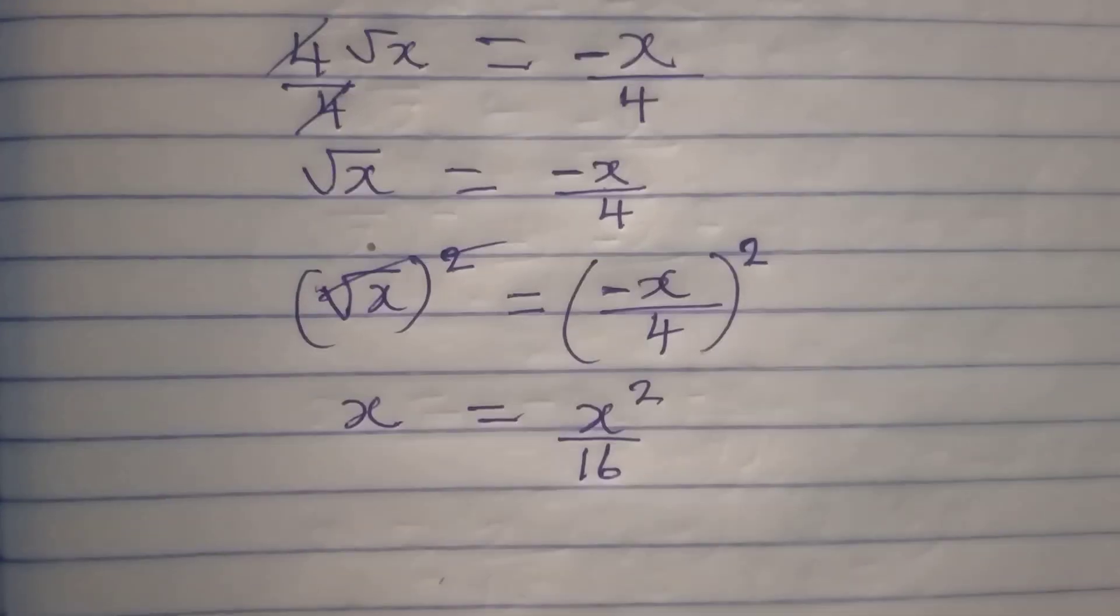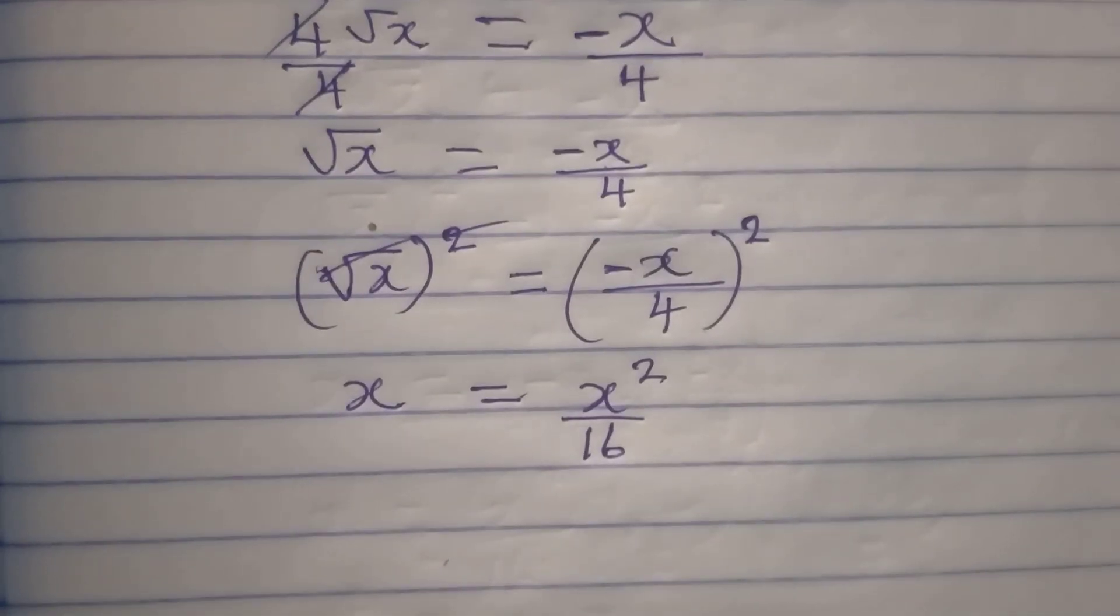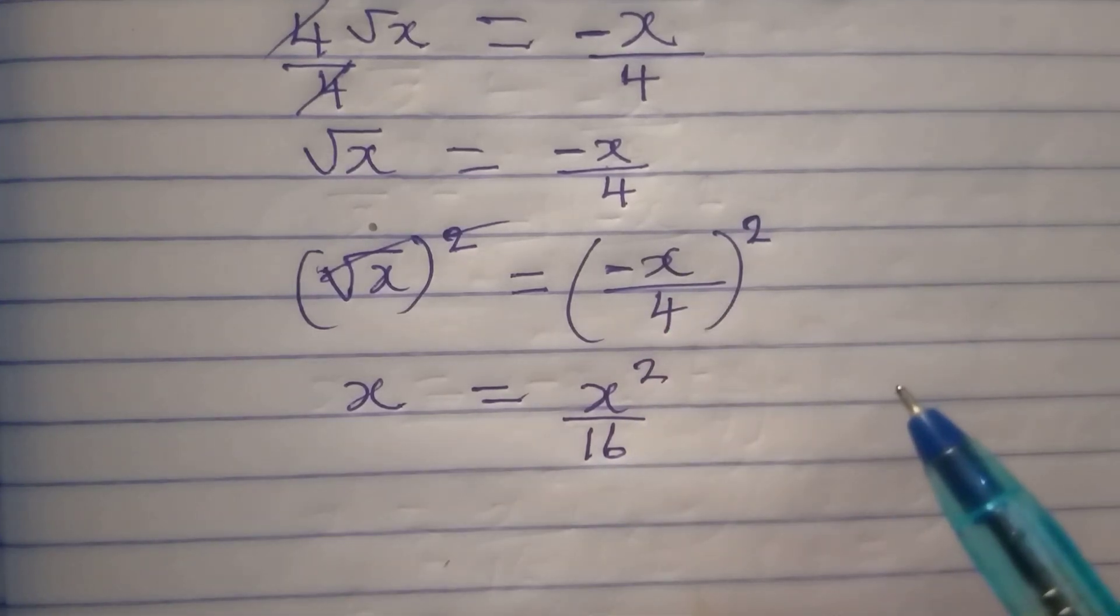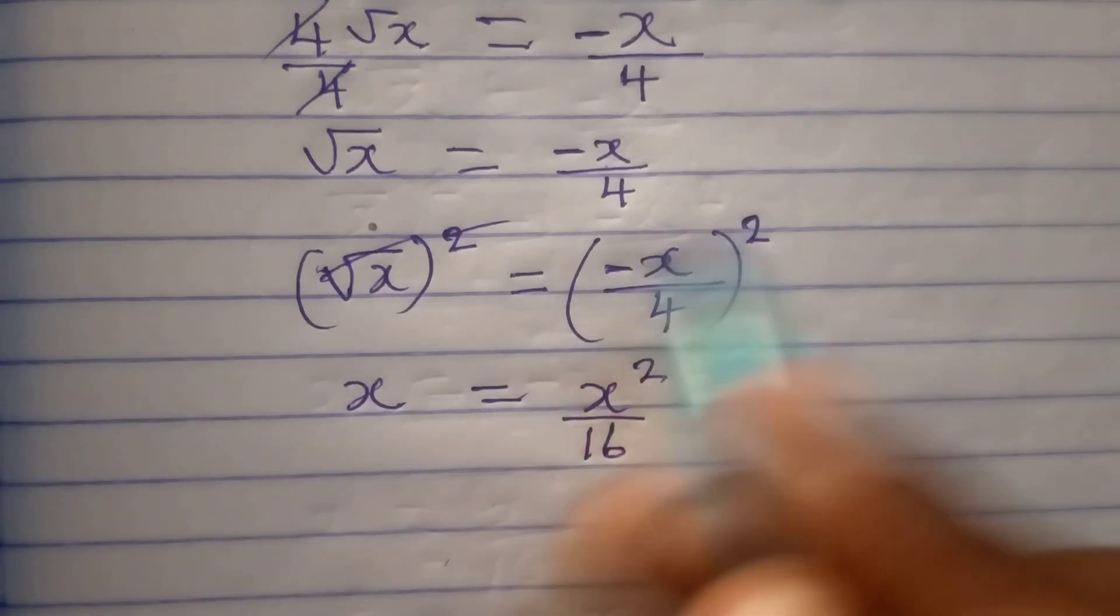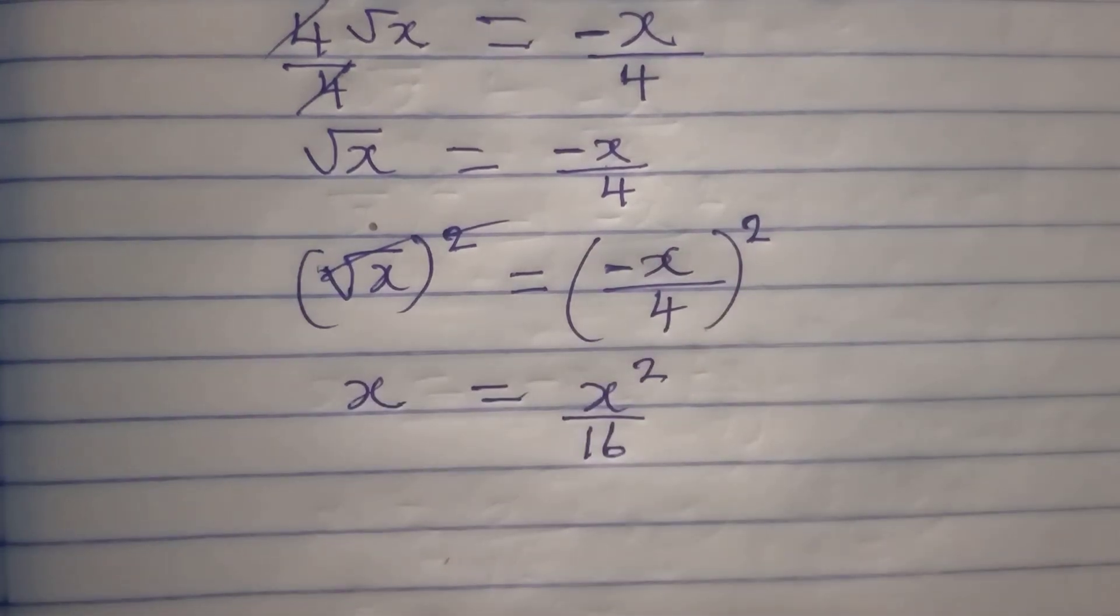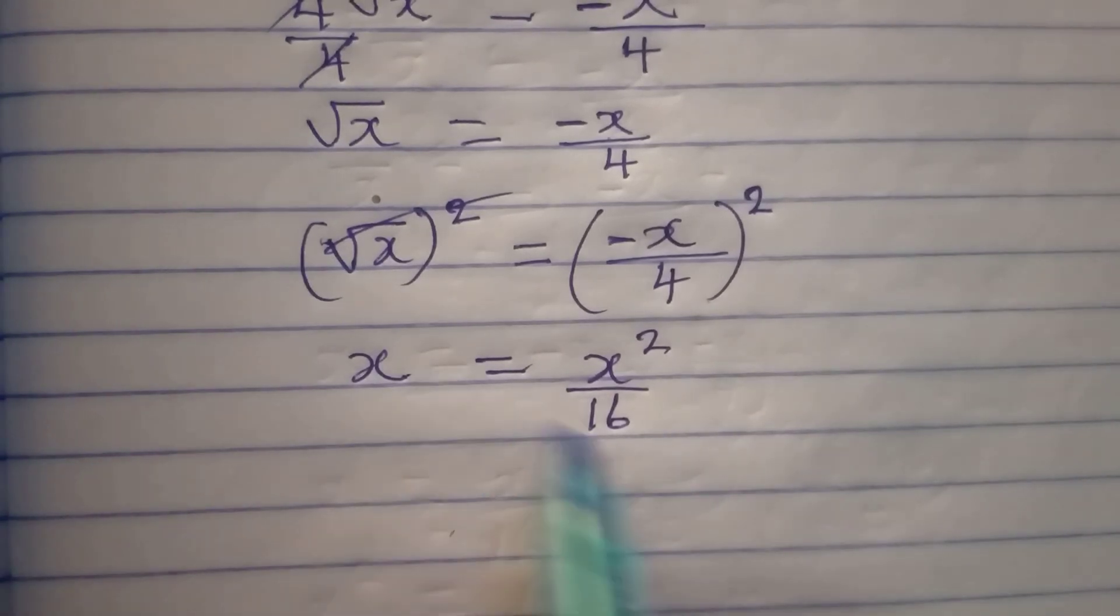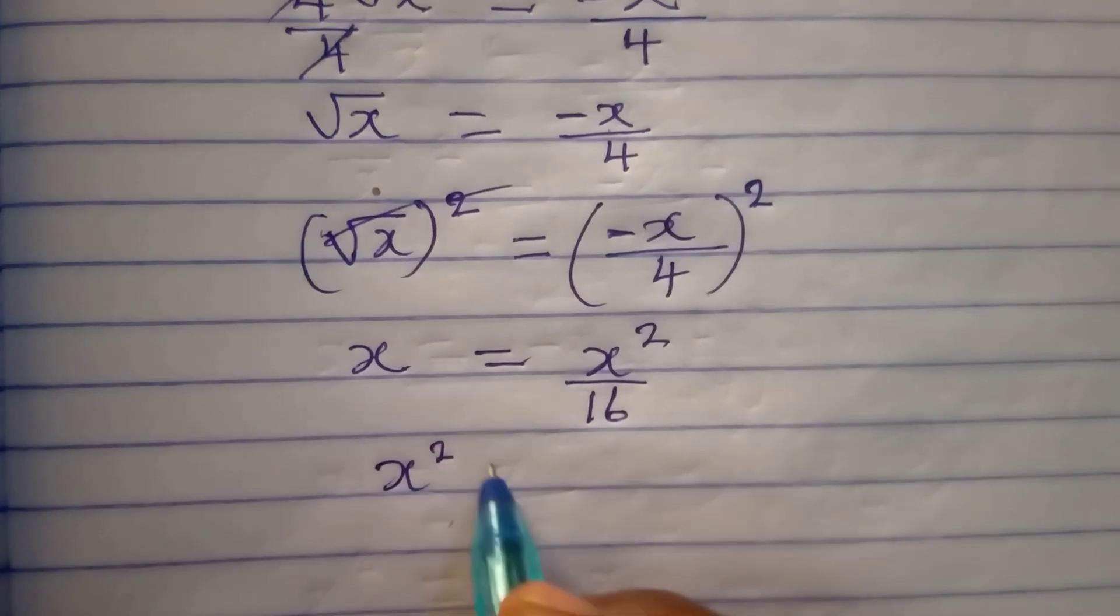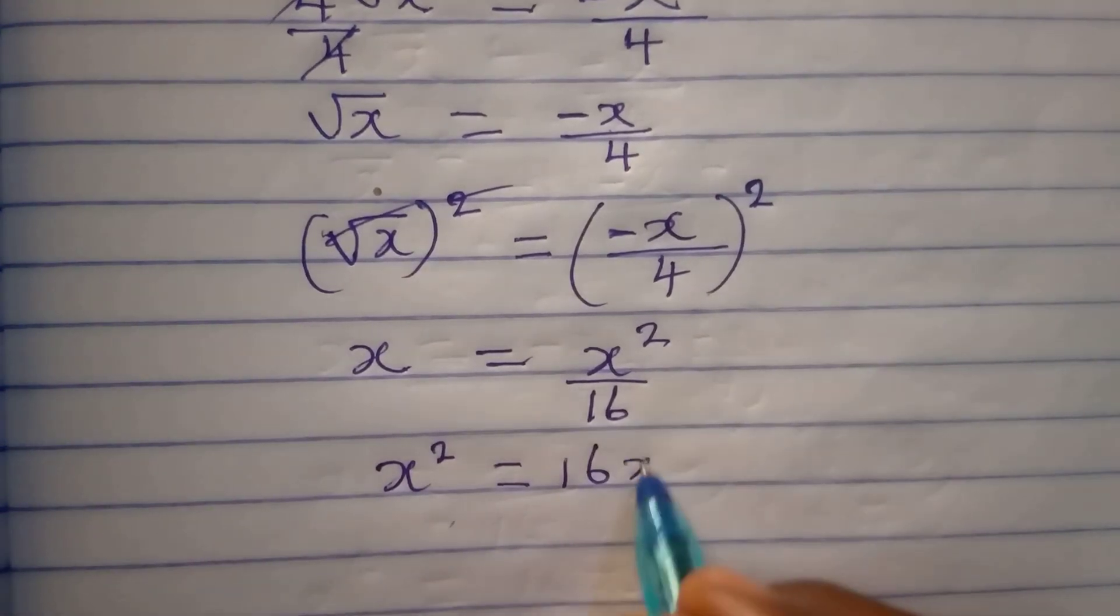Remember that if you have a problem like this and you're dealing with it, the square is for both the numerator and the denominator, especially if they are in the same bracket. From here we can cross multiply so that we'll have x squared to be equal to 16x.